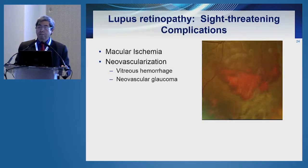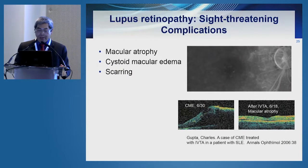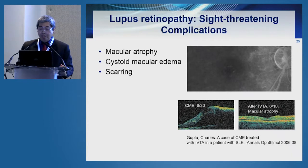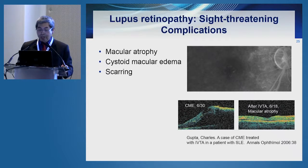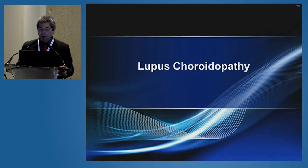Sight-threatening complications of lupus retinopathy include macular ischemia and neovascularization. With enough neovascularization, you can get vitreous hemorrhage as well as neovascular glaucoma. Lupus can also cause macular atrophy from the ischemic process. There have also been case reports of cystoid macular edema during active inflammation, which responds well to intravitreal steroid therapy. If the disease is advanced or prolonged, you can have scarring of the retina causing permanent visual damage.